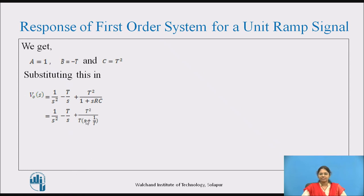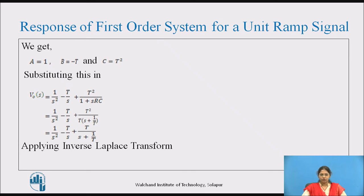After cancelling T from numerator and denominator, the equation is rewritten as 1/s² − T/s + T/(s + 1/T). Applying the inverse Laplace transform, the output response in time domain is Vo(t) = t − T + T·e^(−t/T). Here, t is the inverse Laplace of 1/s², 1 is the inverse Laplace of 1/s, and e^(−t/T) is the inverse Laplace of 1/(s + 1/T).